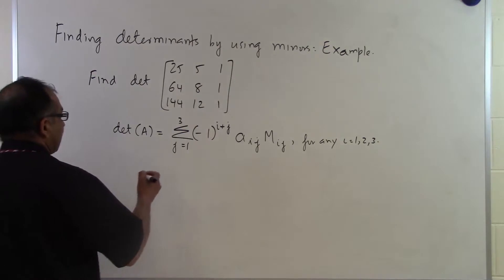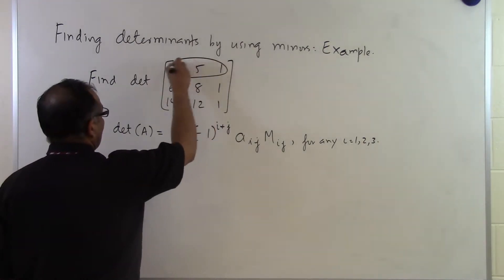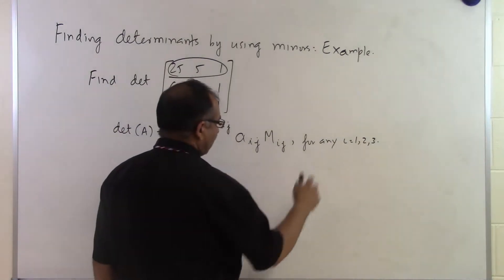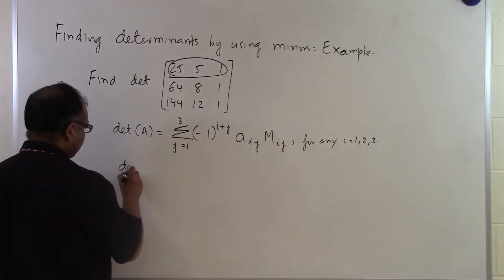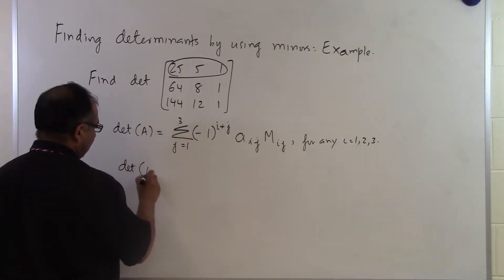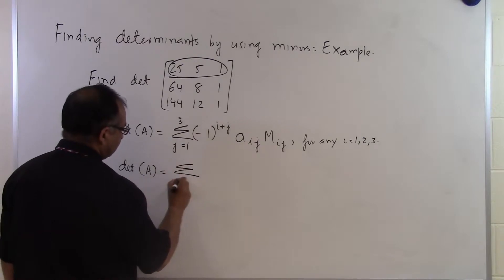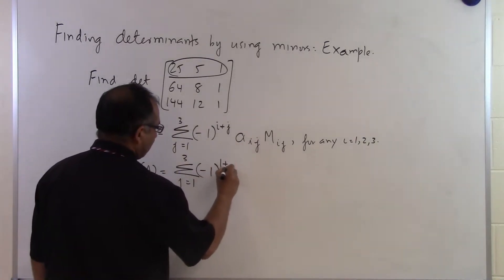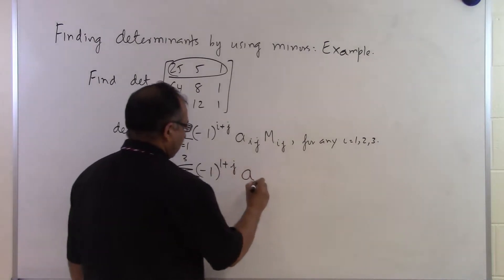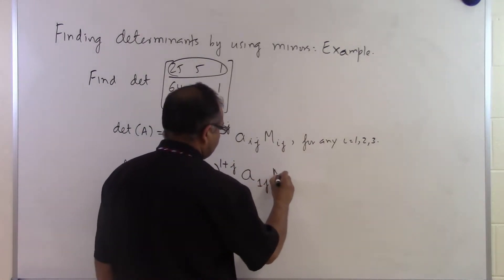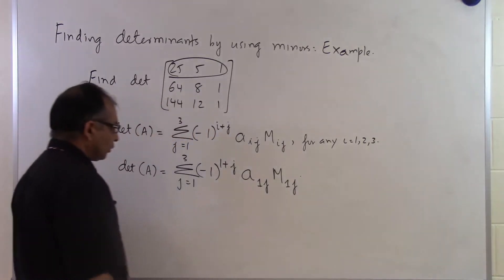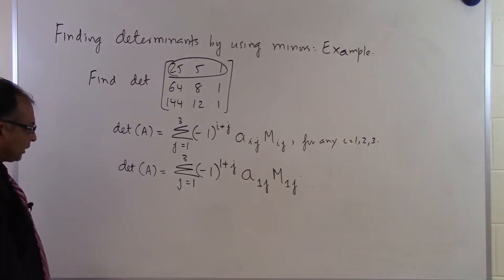Let's suppose I take the first row, so i equal to 1. The determinant of A equals the summation from j equal to 1 to 3 of minus 1 raised to the power 1 plus j, times a-sub-1j times m-sub-1j. That's the formula I'll use to find the determinant of A.